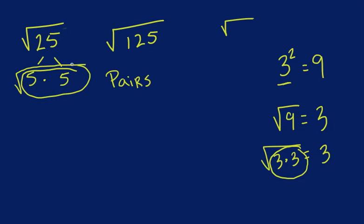We have a pair of 5's right here, so we just take it out as 1, 5. And the square root of 25 equals 5.